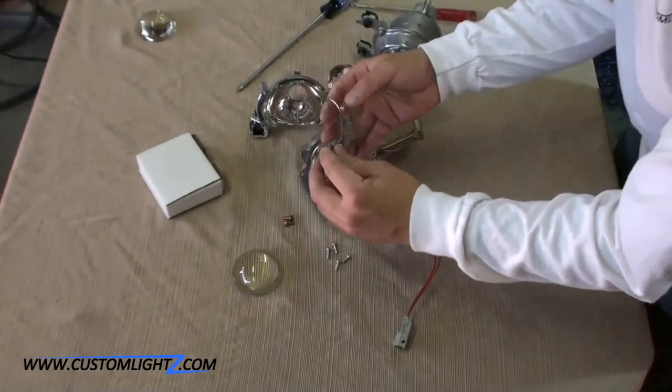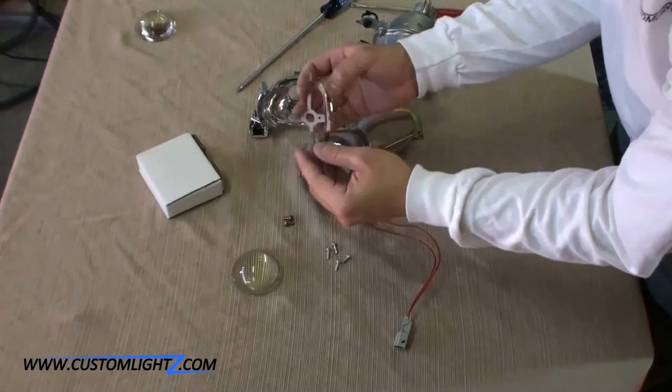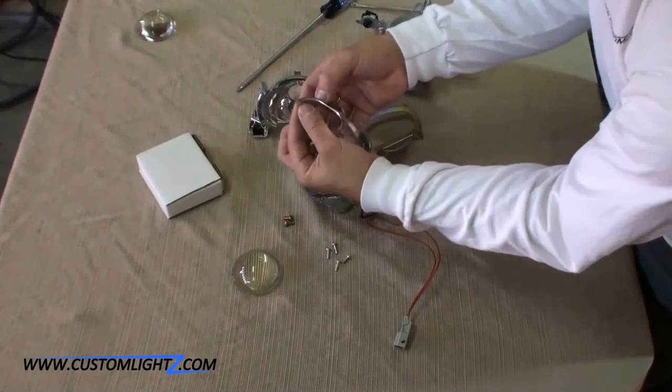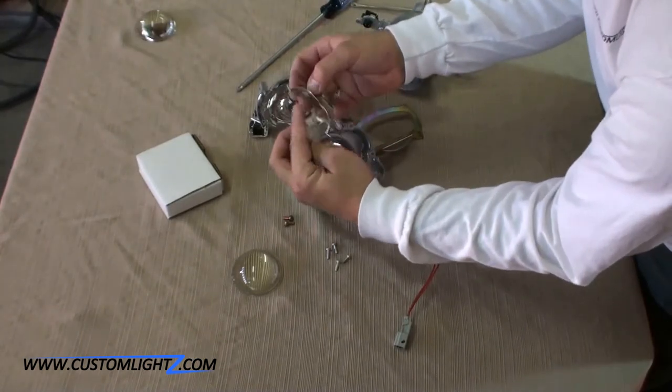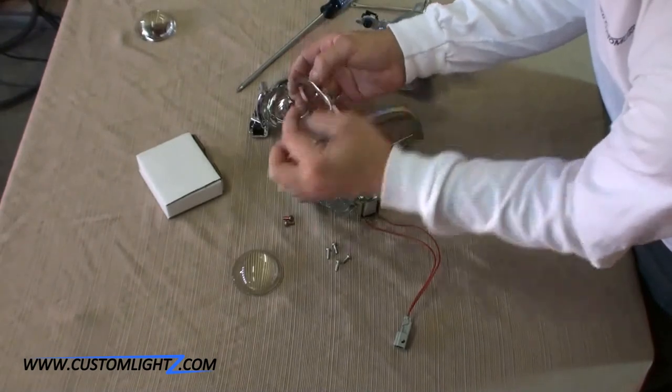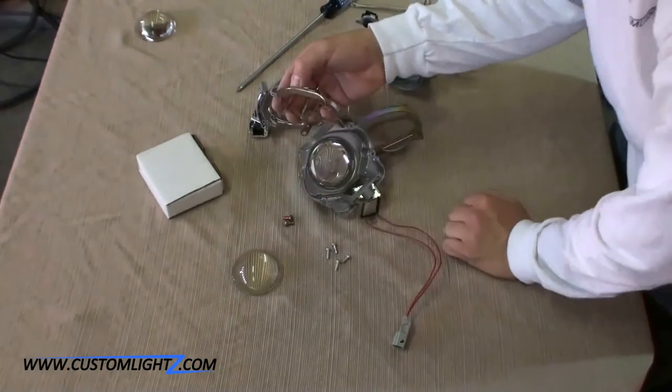So you can see that this shield only has one slit and you can actually, I don't know if the camera can catch this, but you can see where it used to be two slits and we just simply cut off the front shield. That usually will do the trick as well.